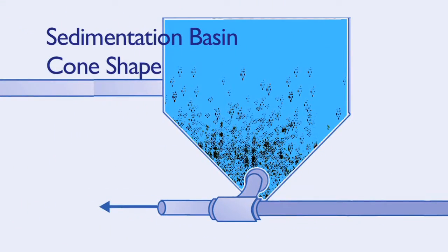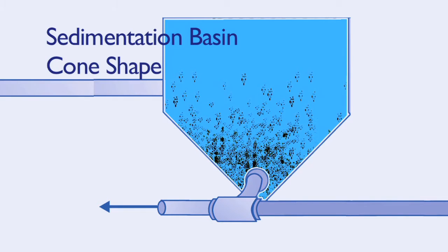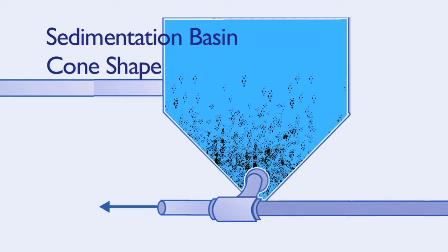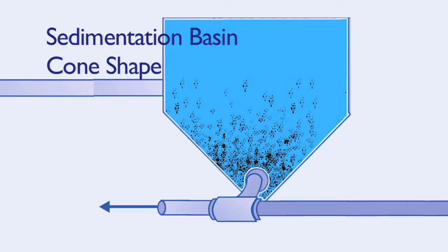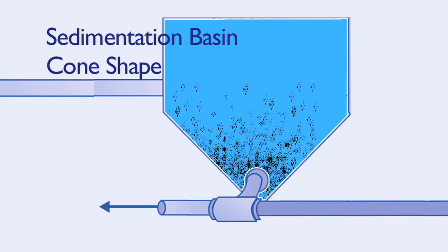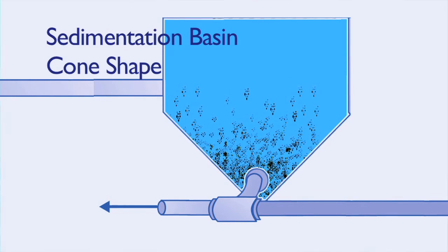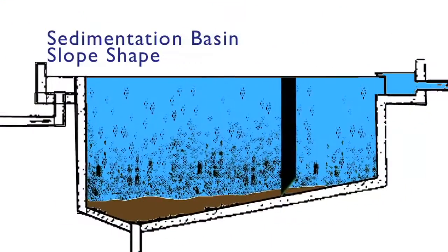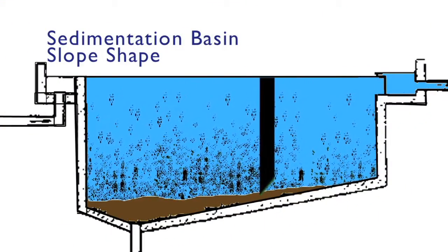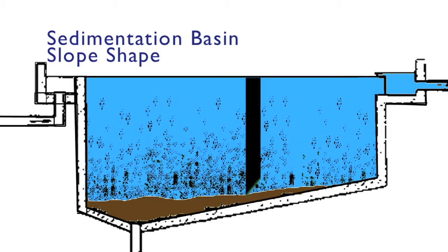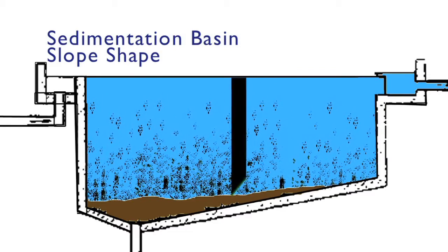Once the sediment sinks to the bottom of the tank it has to be removed, or it will build up and cause problems in the next step of the treatment process. Some sediment basins have cone-shaped bottoms where the sediment is collected. Others have bottoms that slope to one end, or have squeegee baffles that very slowly scrape the bottom, collecting the sediment at one end.